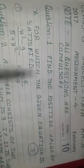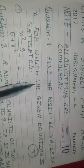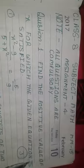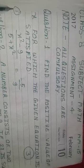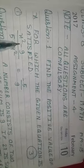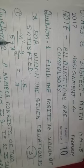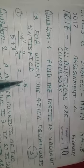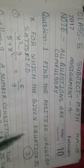Question Number 1. Find the positive value of X for which the given equation is satisfied. X square minus 9 upon 5 plus X square is equal to minus 5 upon 9. This question 3 marks.